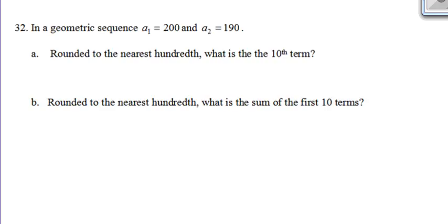we're told that a sequence has a first term of 200 and a second term of 190. I know for anything that I do, I'm going to need to know its ratio. So I'm going to start off by taking the second term, divide it by the first term to find the ratio. So 190 divided by 200, and I'm going to get 0.95.